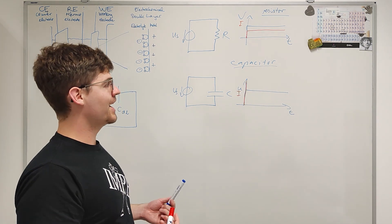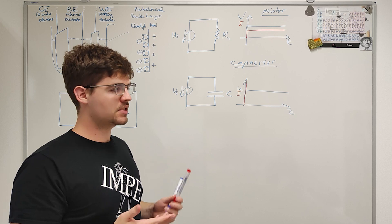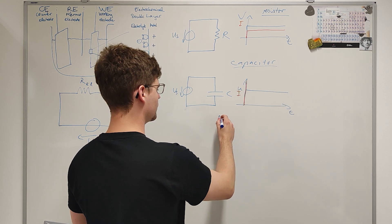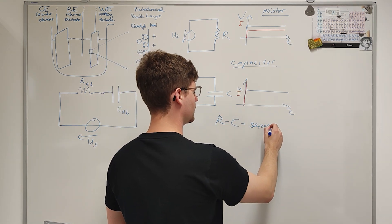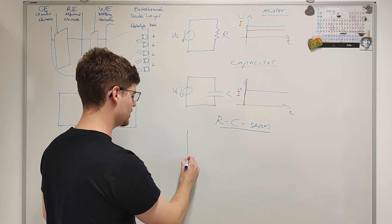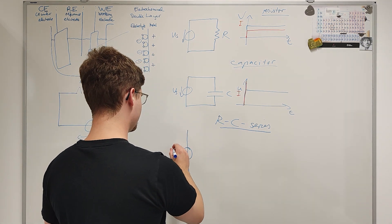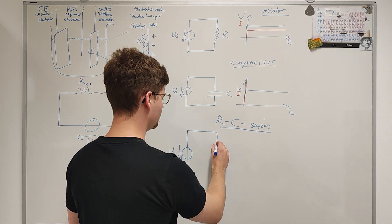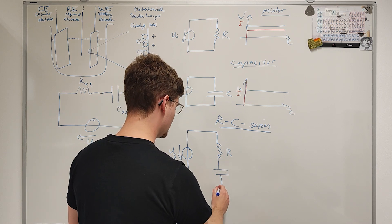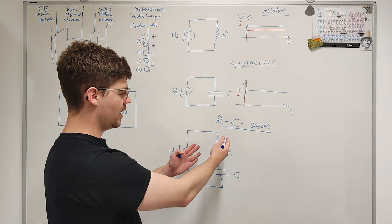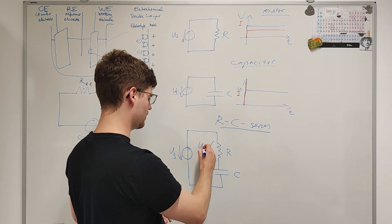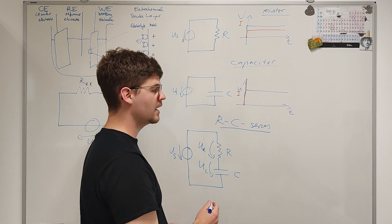However, now what we have is not one of these elements alone, but a series connection between them. So, the circuit for the RC element looks like this. The potentiostat, or more generally our voltage source, applies a voltage over the resistor and the capacitor. And there are voltages falling off over each of them, while the same current flows through both.